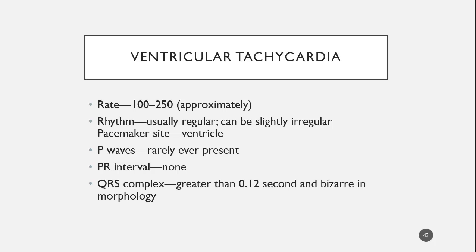Here are the criteria for VTAC. Generally your rate is going to be greater than 150, and can be faster than 200. You will usually see VTAC as a regular rhythm. As you count R to R intervals, that's going to be regular. There's no P wave, no PR interval, and your QRS is almost always going to be wider than 0.12 seconds. Sometimes, especially up in the 220–240 range, that QRS becomes a lot more narrow and you're not exactly sure what you're looking at — that's where treatment with adenosine comes in to help diagnose it.